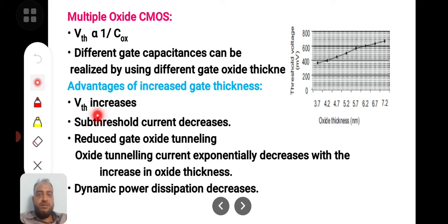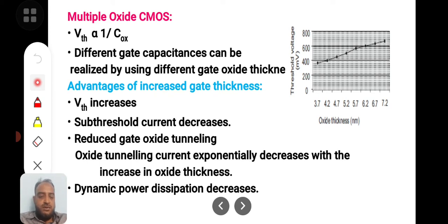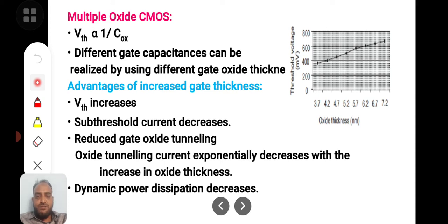Sub-threshold leakage current decreases and gate oxide tunneling is reduced. Gate oxide tunneling occurs when charge carriers from the gate metal structure penetrate through the oxide layer. Because of aggressive scaling down of devices, charge carriers tunnel through the thin oxide layer, thereby increasing gate leakage current, which means power dissipation. With thick oxide layers, gate oxide tunneling is exponentially reduced with increasing oxide thickness.